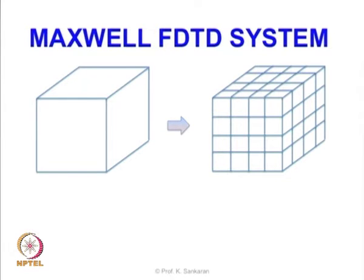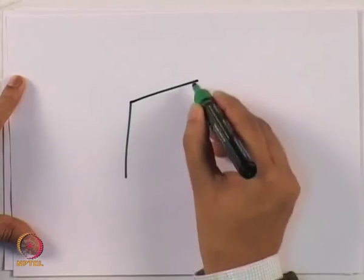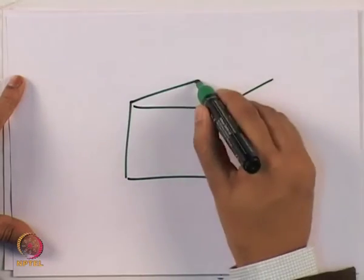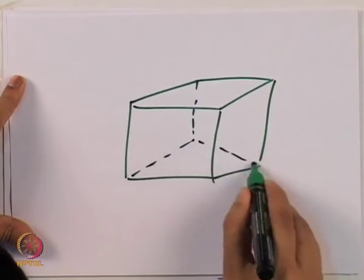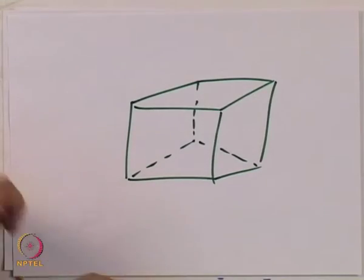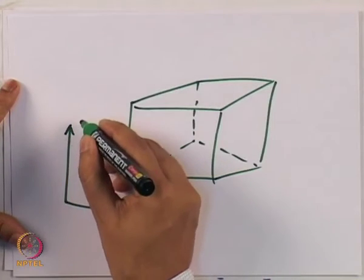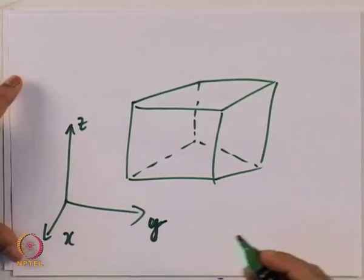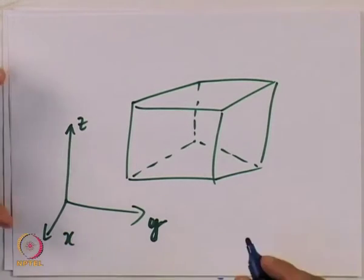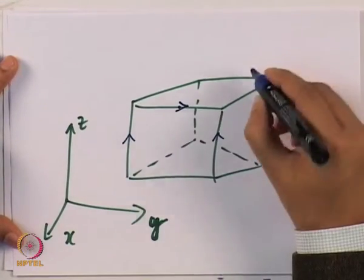These small cubes are going to be assembled one next to the other with no gaps between them, completely filling the computational domain. What is interesting to know is what is inside one single cube. If we take one single cube, we have certain quantities that we are going to define. The electric fields are going to be on the edges of the cube.